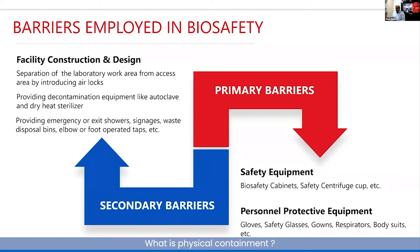safety cups in a centrifuge, or autopipets. The second type of primary barrier is personal protective equipment, which includes safety gloves and the respiratory suits that people wear.